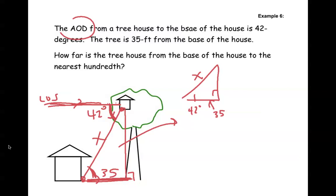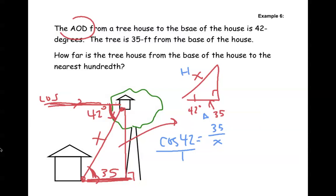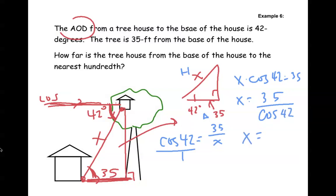This is a rare occasion where we do not use tangent — we have the adjacent side (35) and the hypotenuse, so we use cosine. Cosine of 42 equals adjacent over hypotenuse. Creating a proportion and cross-multiplying: x times cosine 42 equals 35, so x equals 35 divided by cosine 42. You need to be careful how you enter that into your calculator, and when you do, you get around 47.1 feet — the distance from the base of the treehouse.